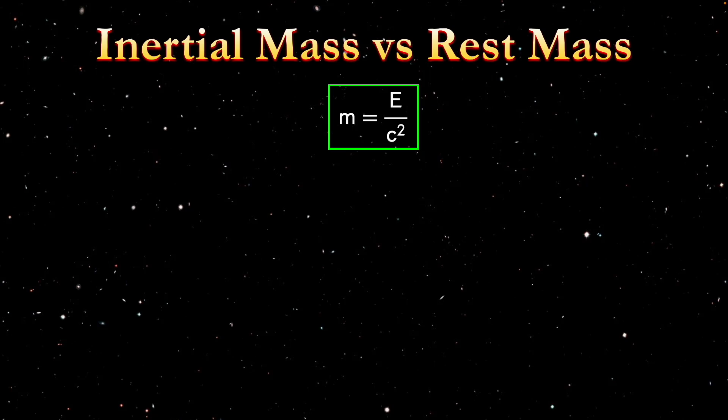And in fact, this equation for inertial mass holds for all particles, whether they have rest mass or not. So since then, this equation has been more famously written as E equals MC squared, where M is equal to the inertial mass of a particle. And this holds for all particles.